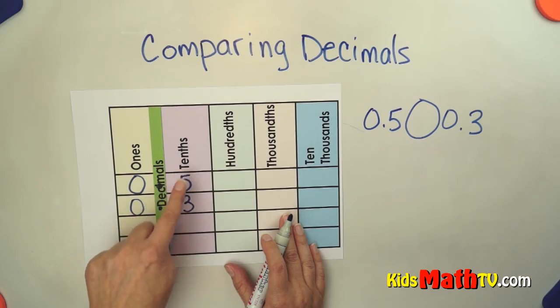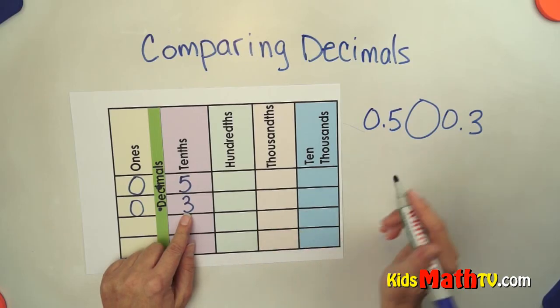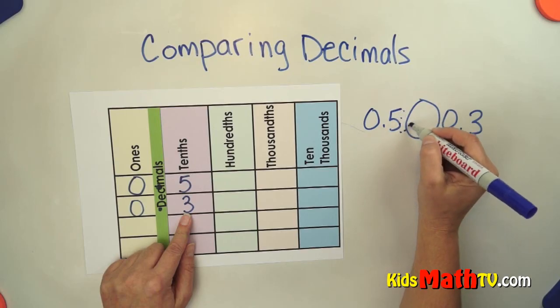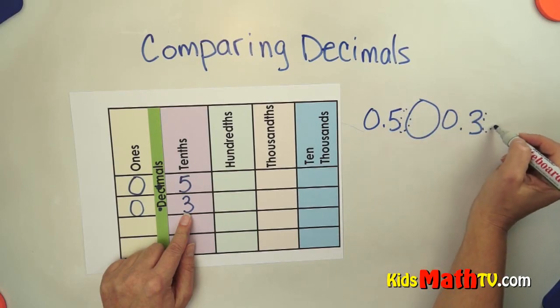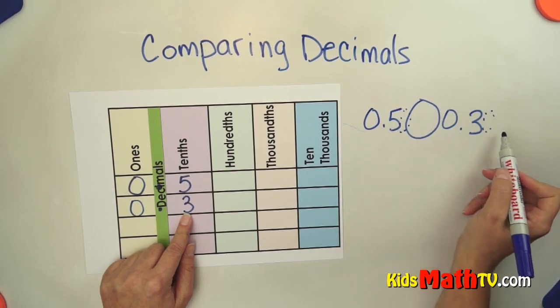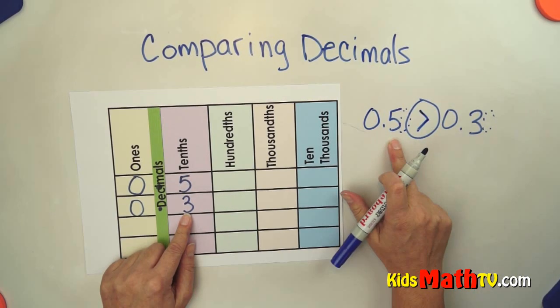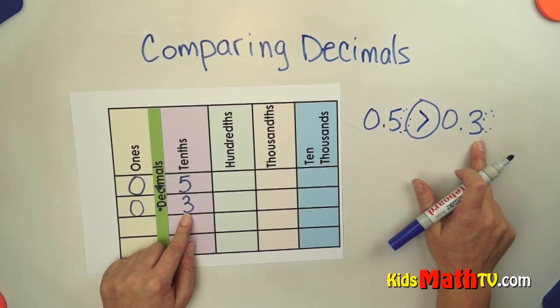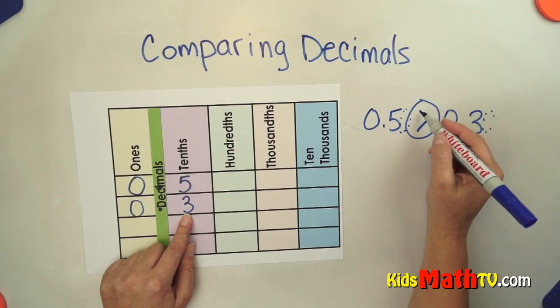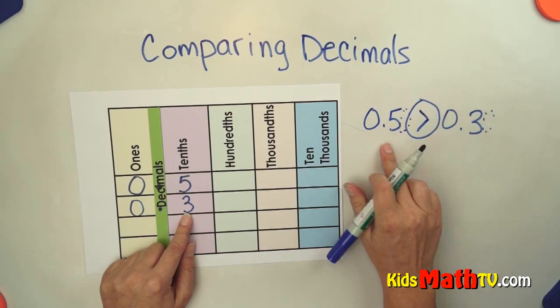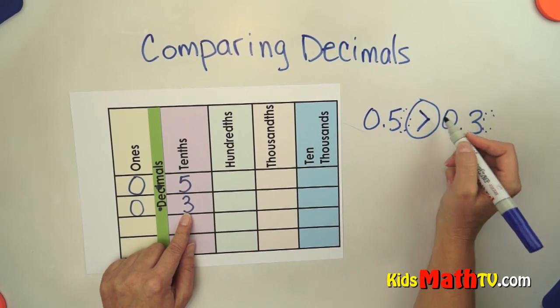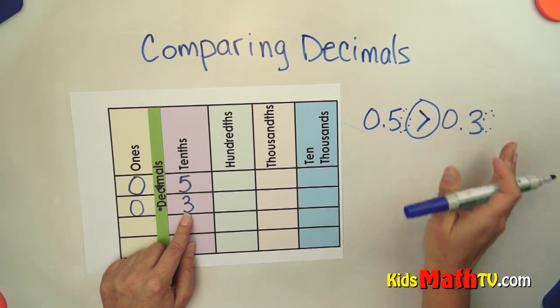In this case, 5 tenths is more than 3 tenths. You can think of this as money as well. This would be 50 cents and 30 cents. I'd rather have 50 cents than 30 cents, so 5 tenths is greater than 3 tenths. Remember, the big open mouth goes towards the bigger number, and the small point goes towards the smaller number.